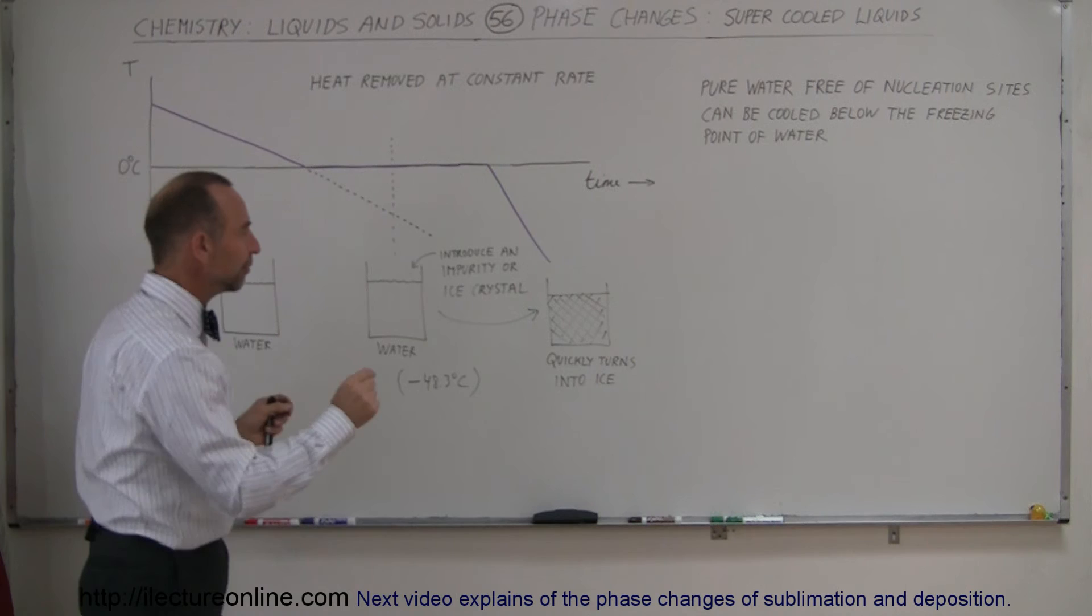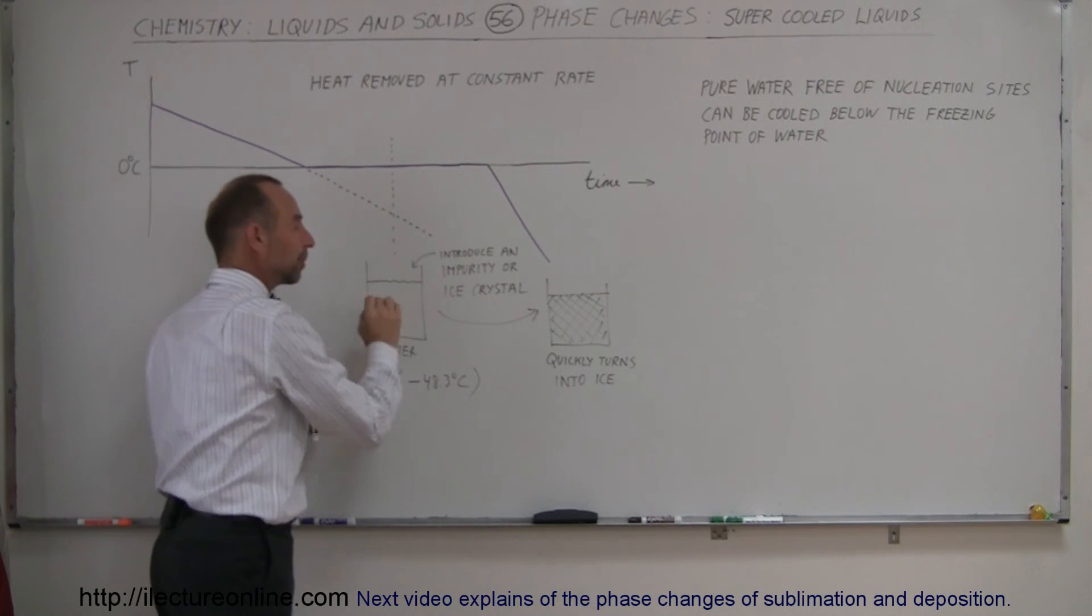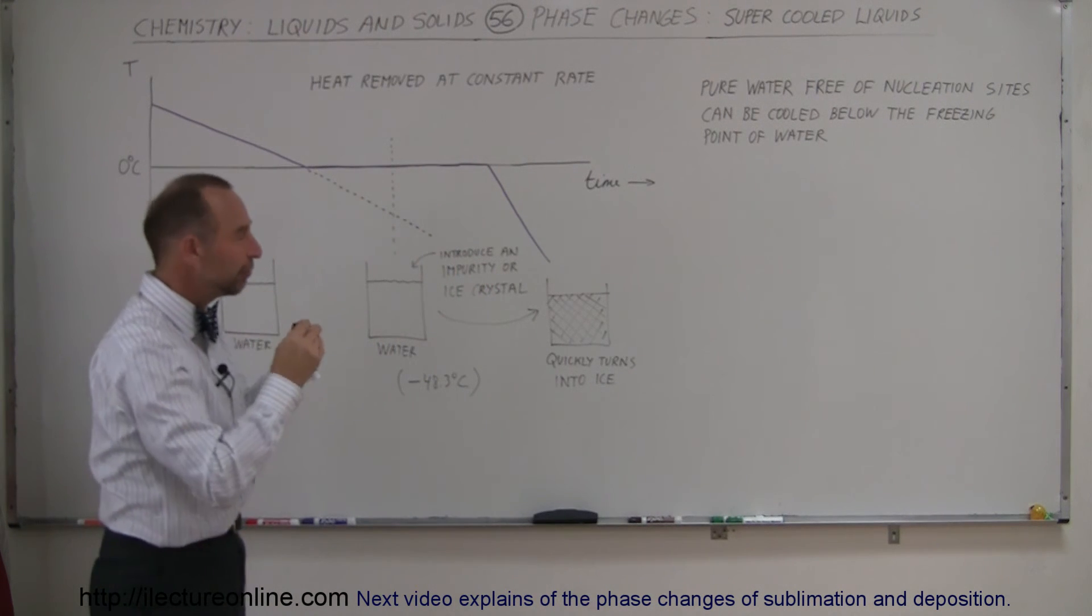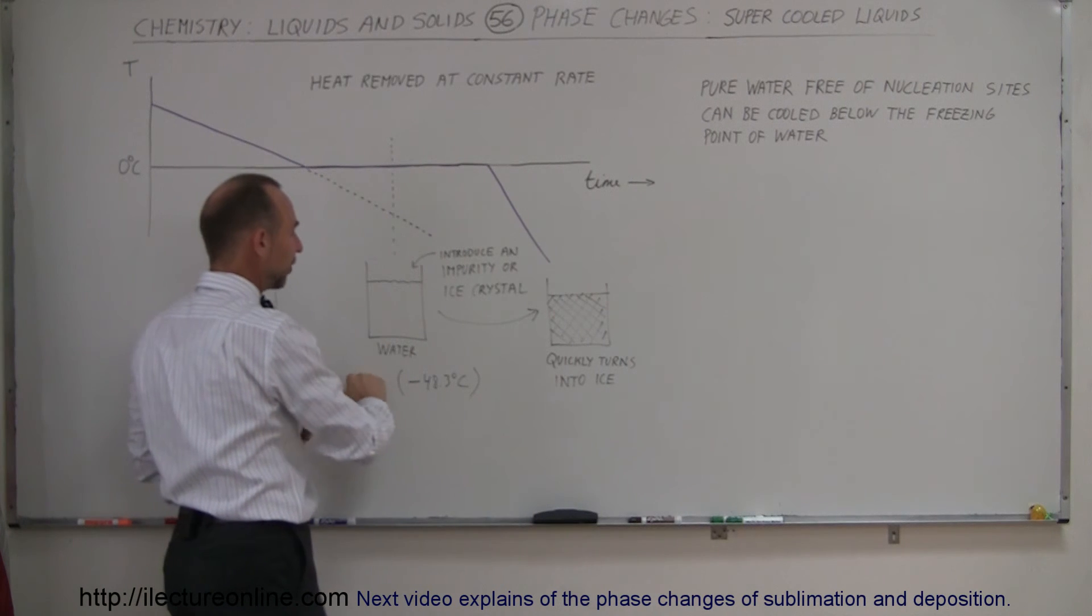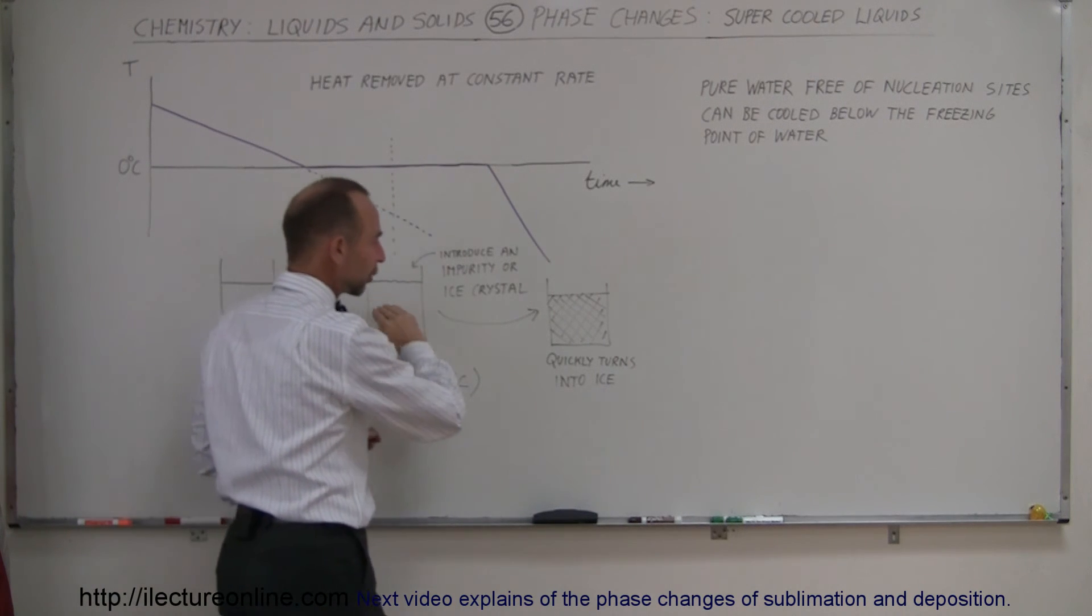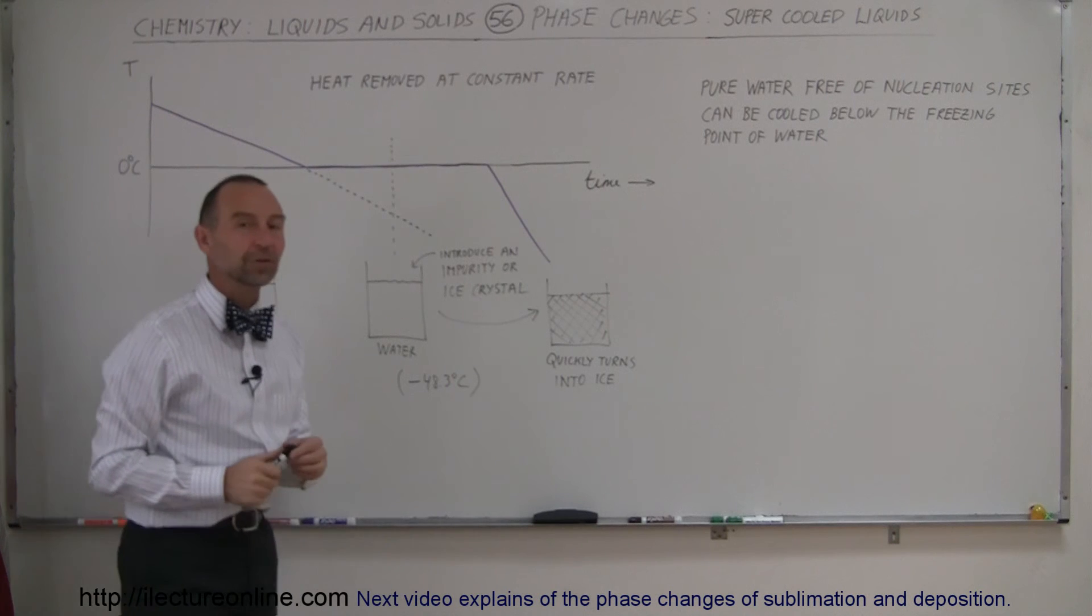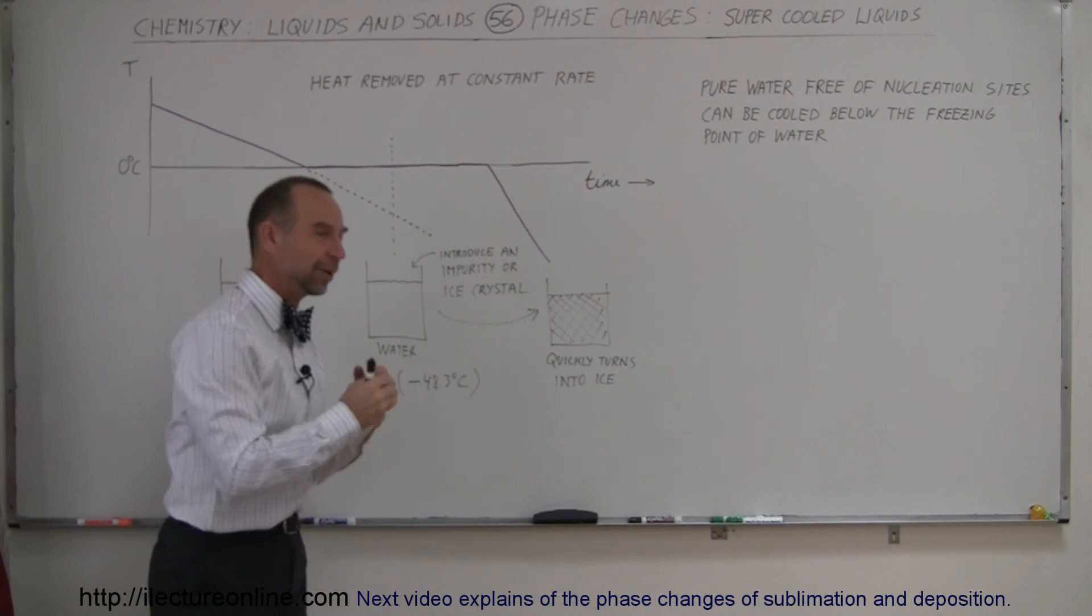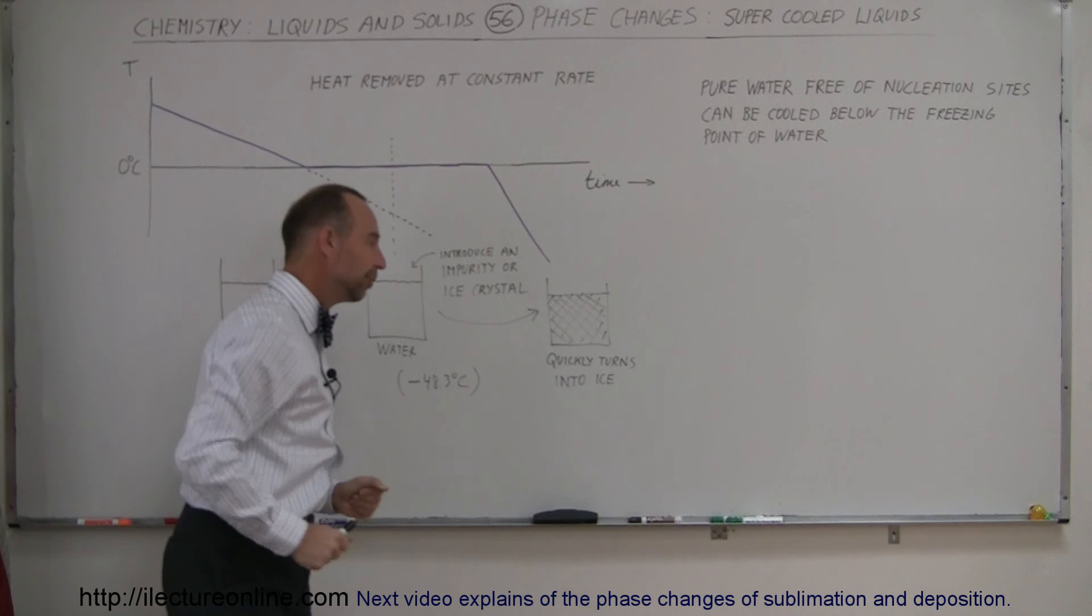But at that point, if you introduce any sort of impurity or an ice crystal or something like that around which ice can form, then of course, as the water is at this low temperature, very, very quickly, the water will turn into solid ice. And that is quite a sight to see when it just quickly goes from water into ice.